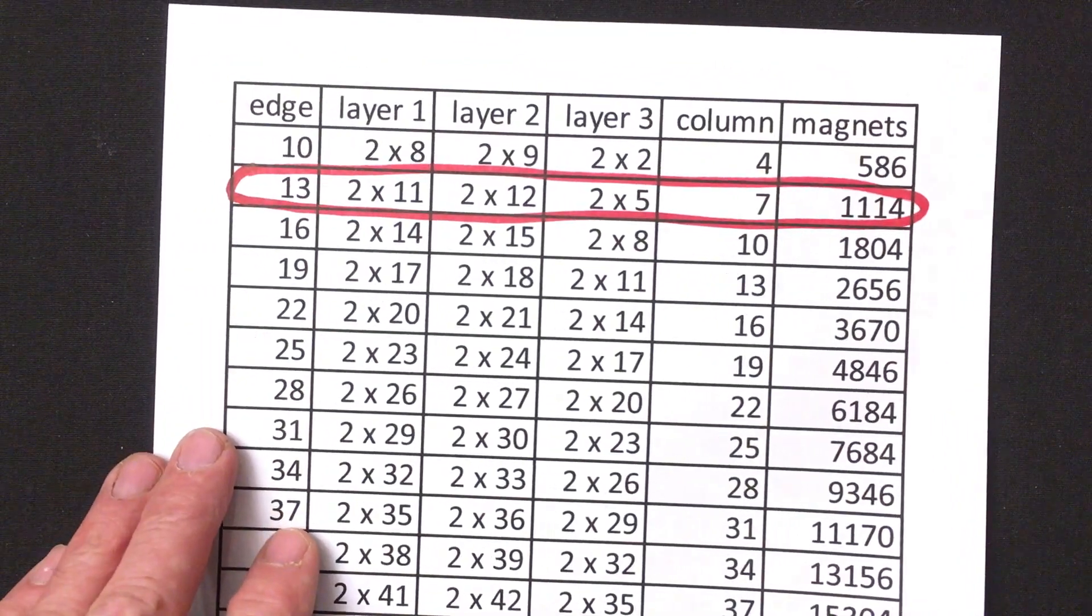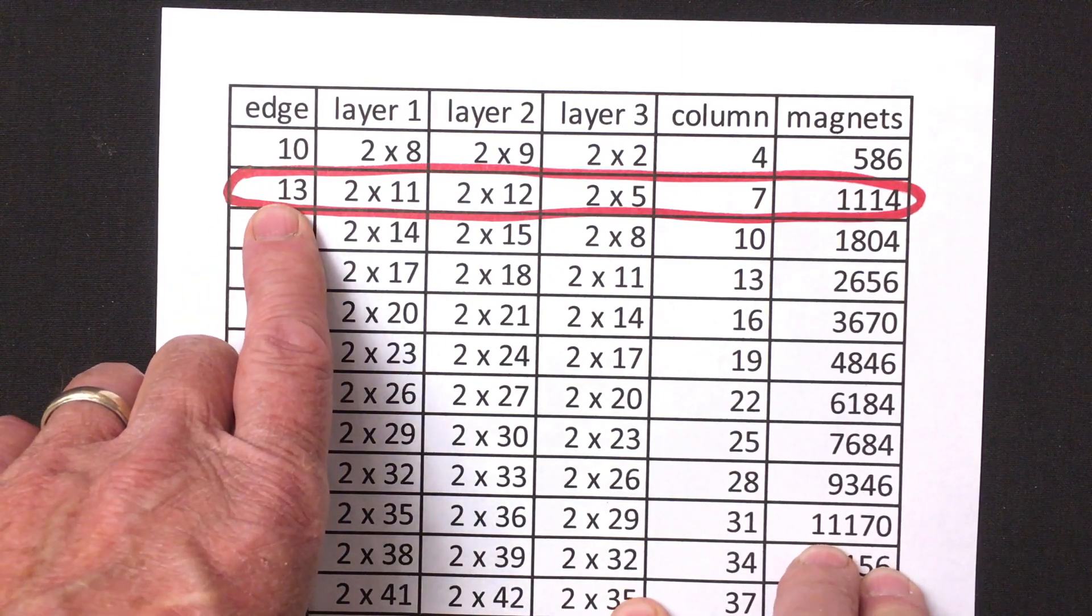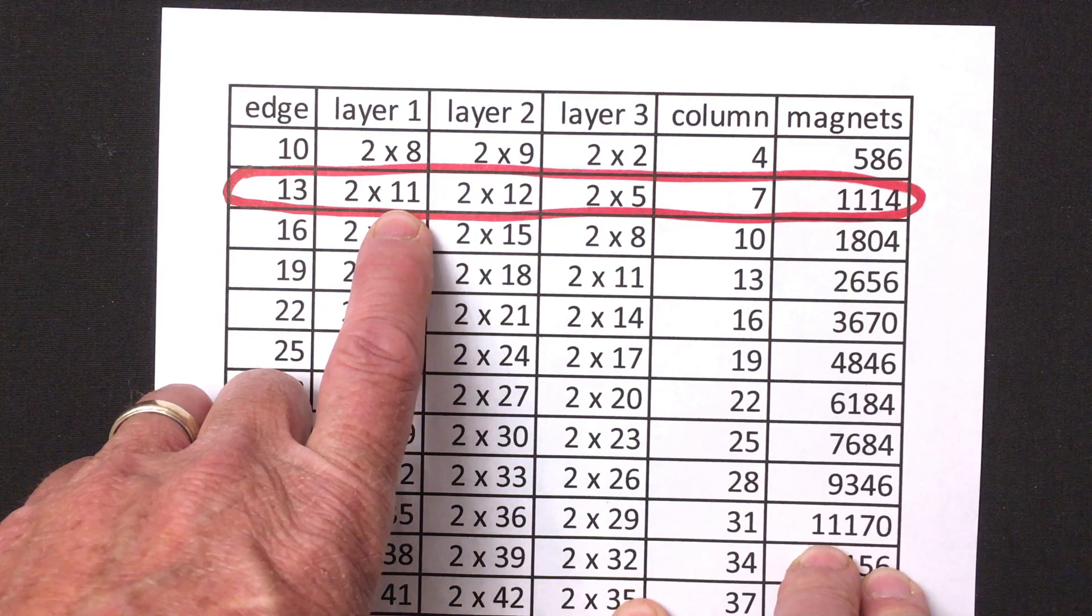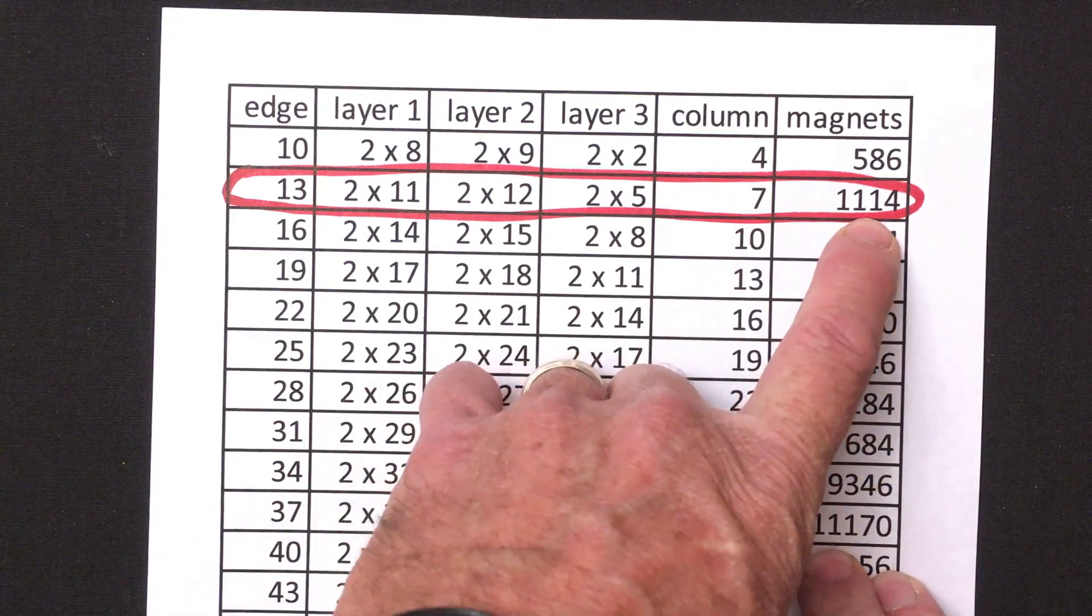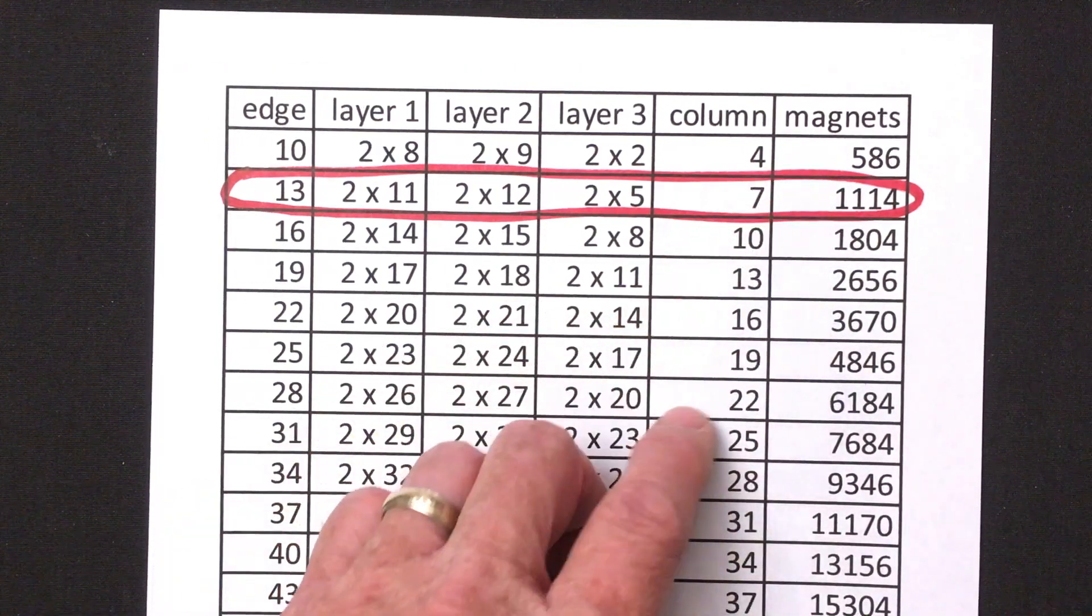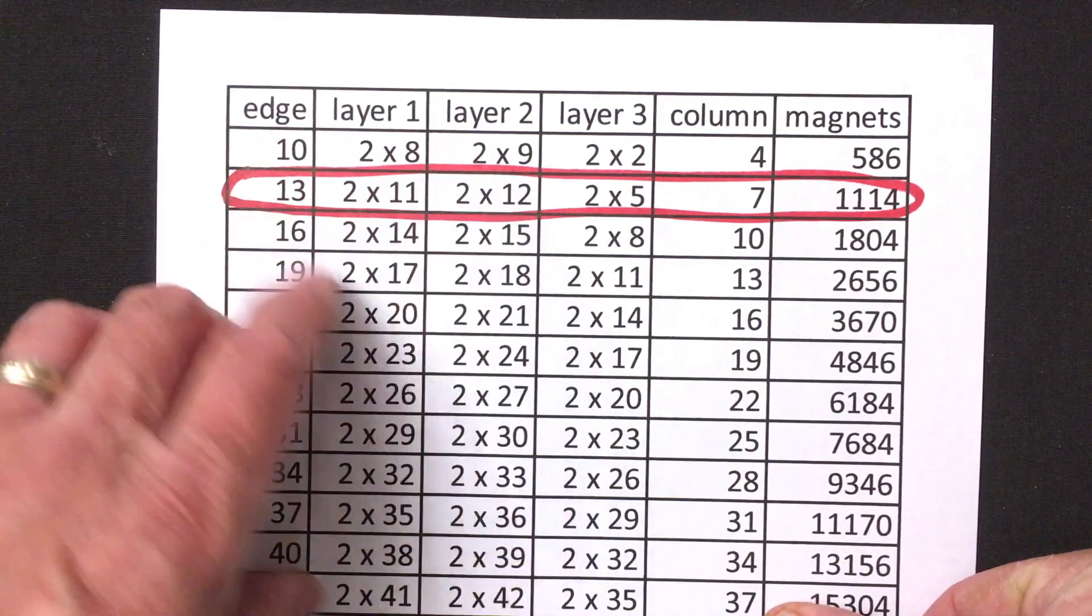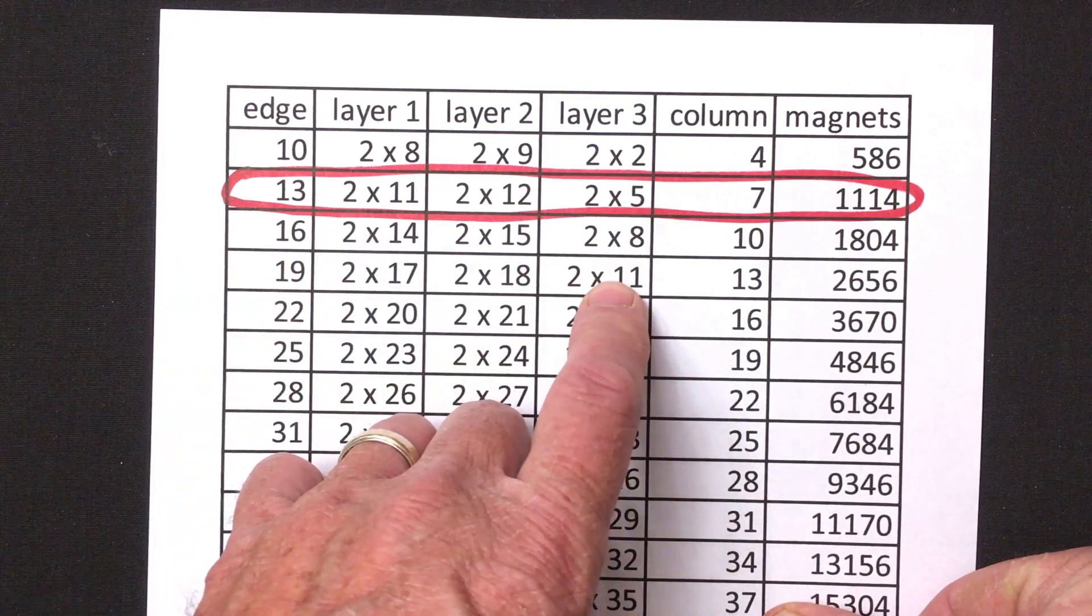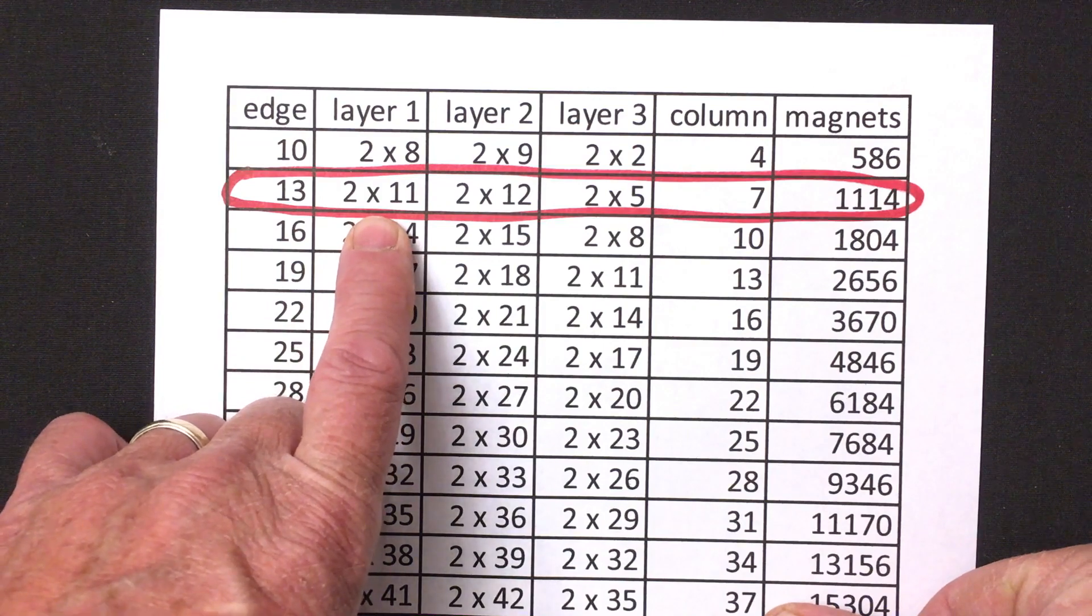And to do that we use the following table and there's a copy of this table in the written description. What I'm going to do is to show how to do this for edge count 13. I'm going to build three layers. The bottom layer, the layer 1 is 2 by 11, layer 2 is 2 by 12, layer 3 is 2 by 5. We'll need a column. I'll show how to build that. And this particular build requires 1114. So depending on how many magnets you have you can decide which size you want to try and build. One thing to note is that layer 1 and layer 2 are the same as they would have been for the regular double walled octahedron. We just need this reinforcement layer 3 to help out and the column.